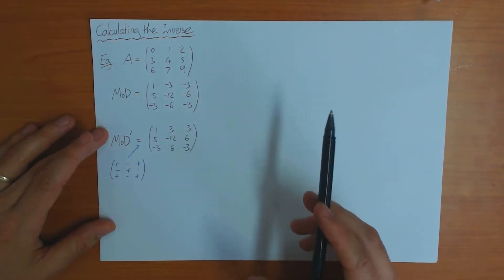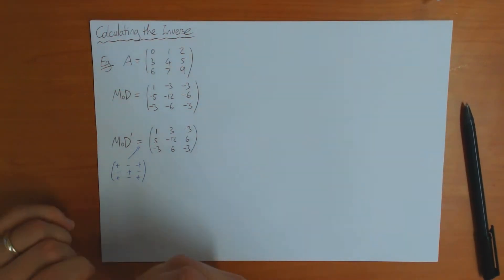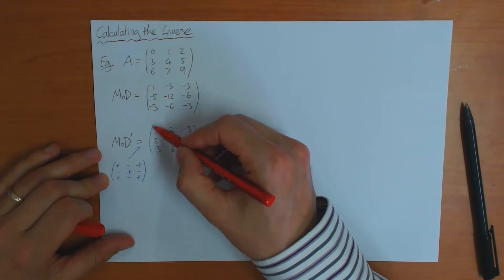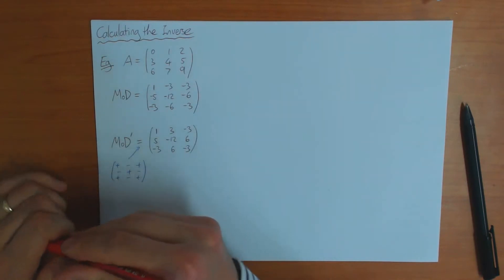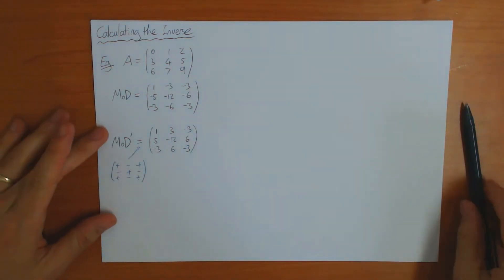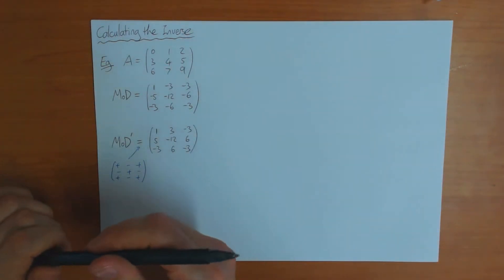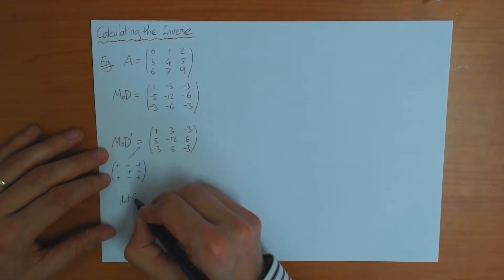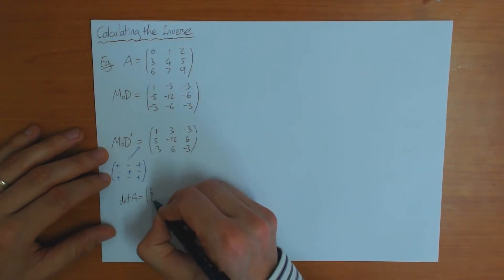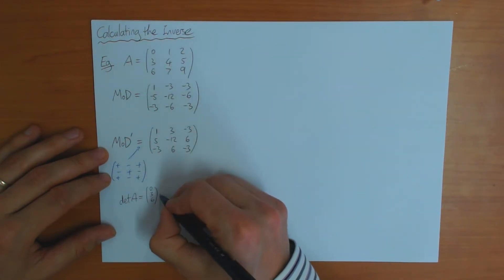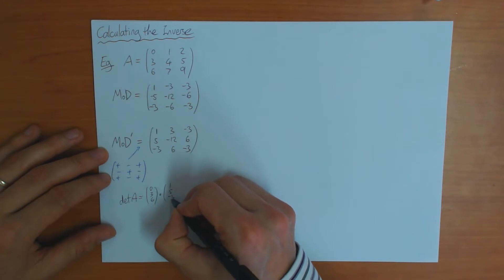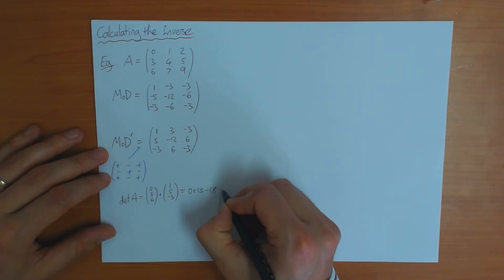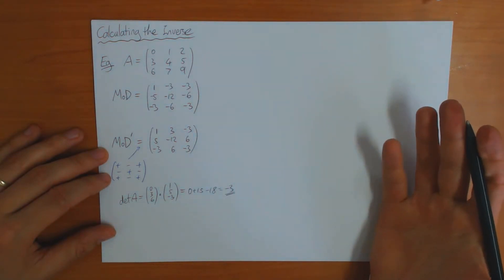You can find the determinant by picking any row of A and using the dot product with the same row of this matrix. It doesn't matter which row or column you pick. For example, the first row of A is 0, 3, 6, and the first row here is 1, 5, -3. That gives you 0 + 15 - 18, which is -3.